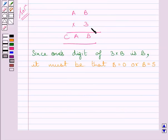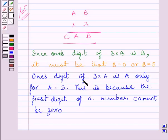Now, here note that 3 multiplied by A is A. Now, value of A cannot be 0 as A is the first digit of this number and we know that the first digit of a number cannot be 0. So, value of A must be equal to 5. Now, we can write 1's digit of 3 multiplied by A is A only for A is equal to 5. This is because the first digit of a number cannot be 0.